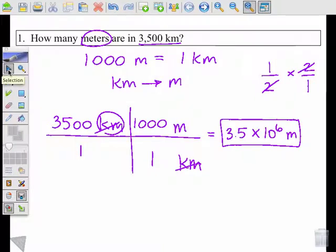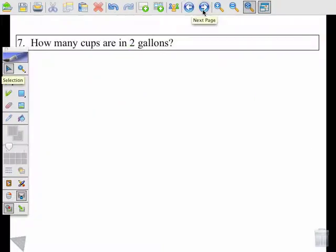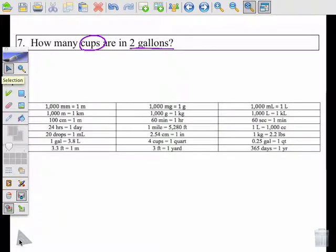We're going to do another one. This one's a little bit more difficult. It's number 7. So again, we're going to follow the same steps. We're going to circle what we're looking for, underline what we're given. So it says how many cups are in two gallons. So this time we're going to try to go from cups to gallons. So again, we reference our conversion chart. We see we cannot go directly from cups to gallons.